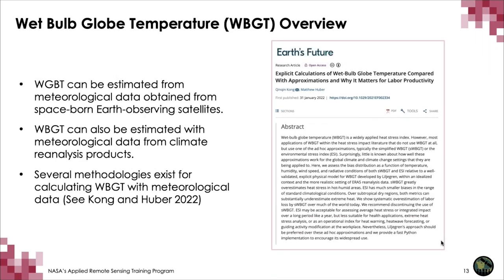Wet bulb globe temperature is typically measured by a field instrument. Many different scientific teams have come up with ways to estimate it through Earth satellite-borne observation platforms, as well as climate reanalysis data products. There are several different methodologies for calculating wet bulb globe temperature with meteorological data. The paper from Kong and Huber in Earth's Future (January 2022) is a great overview, and I highly recommend giving it a detailed reading if you'd like more information.